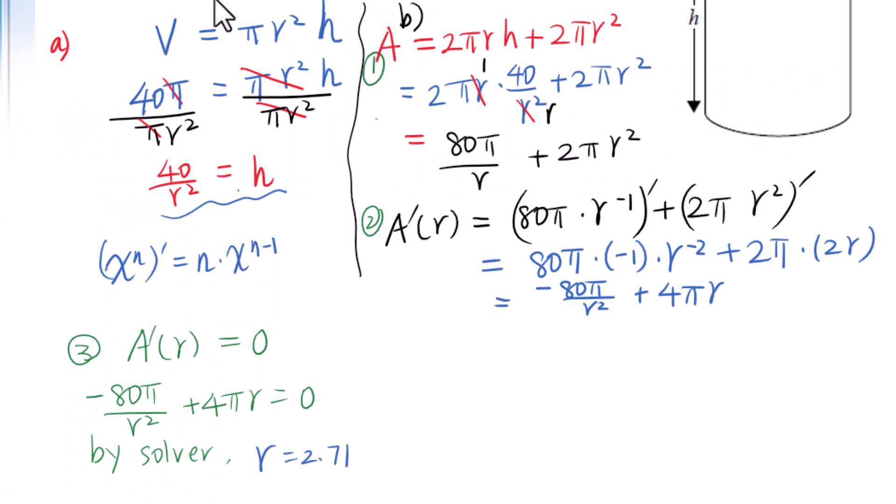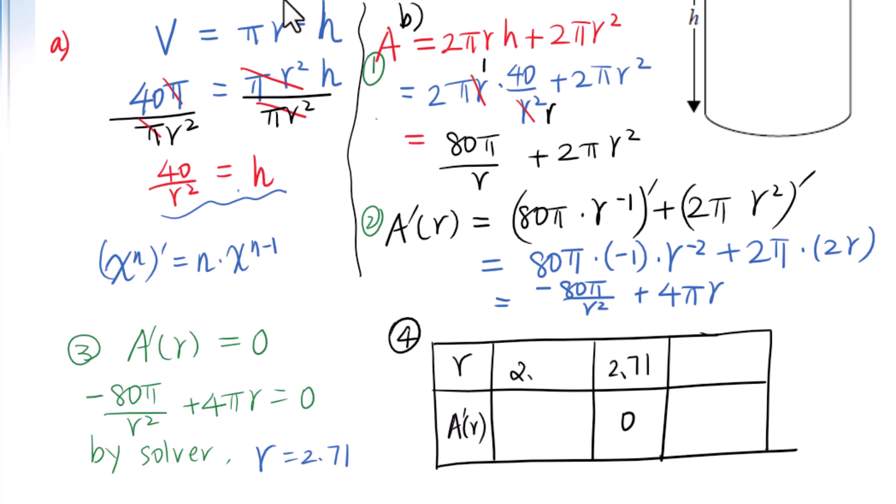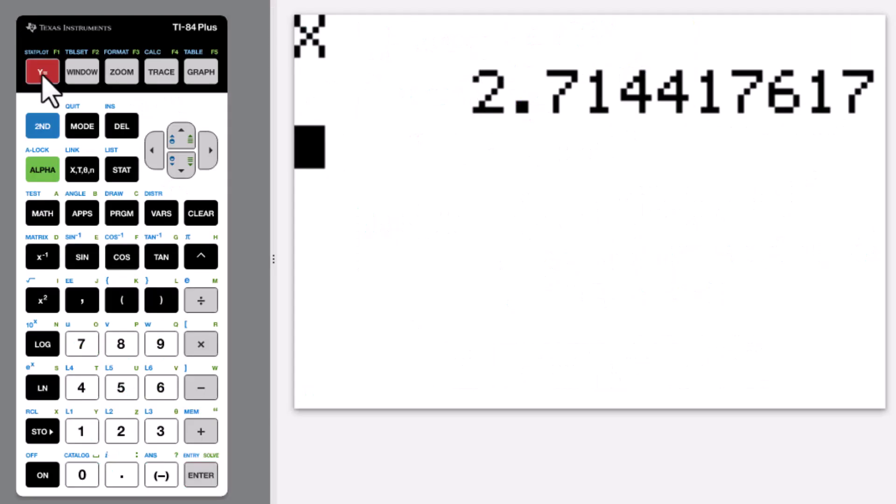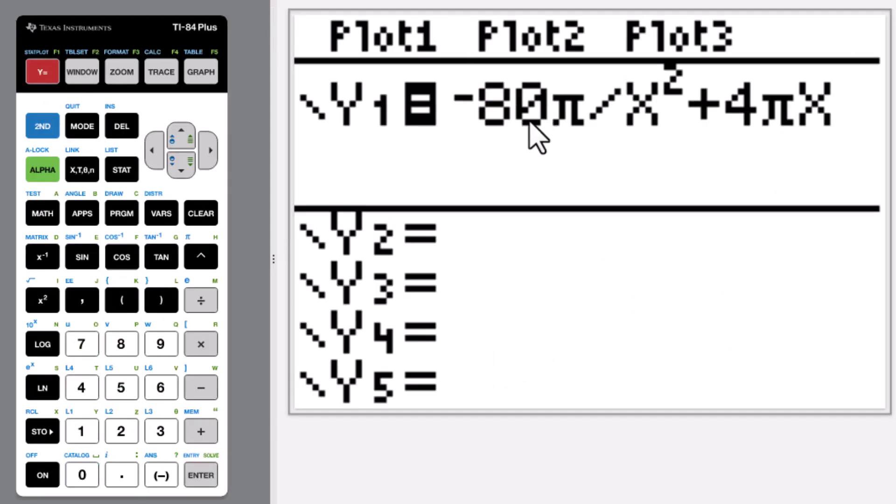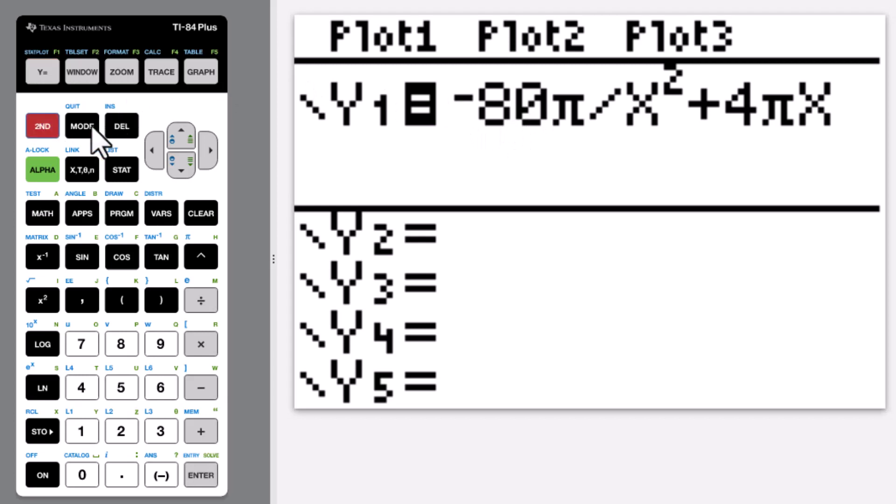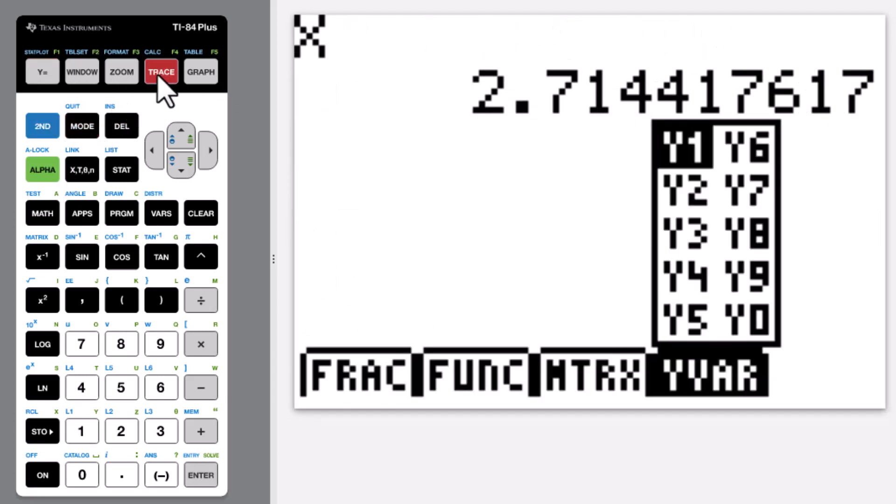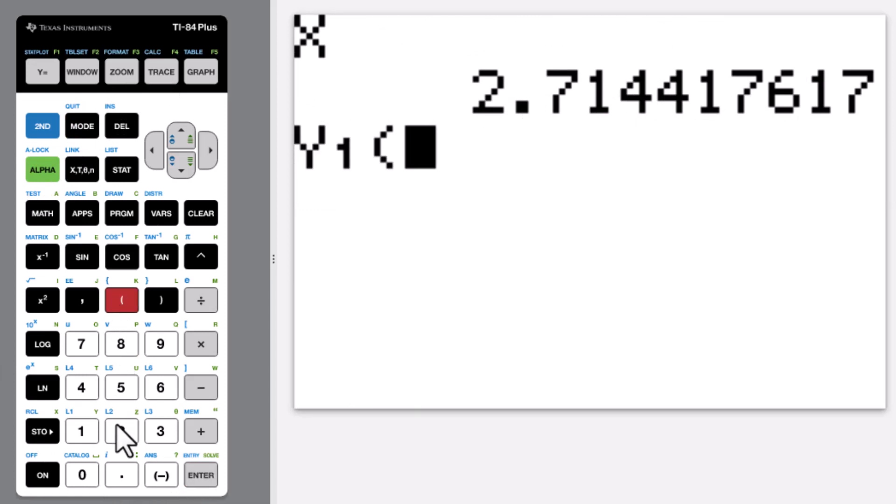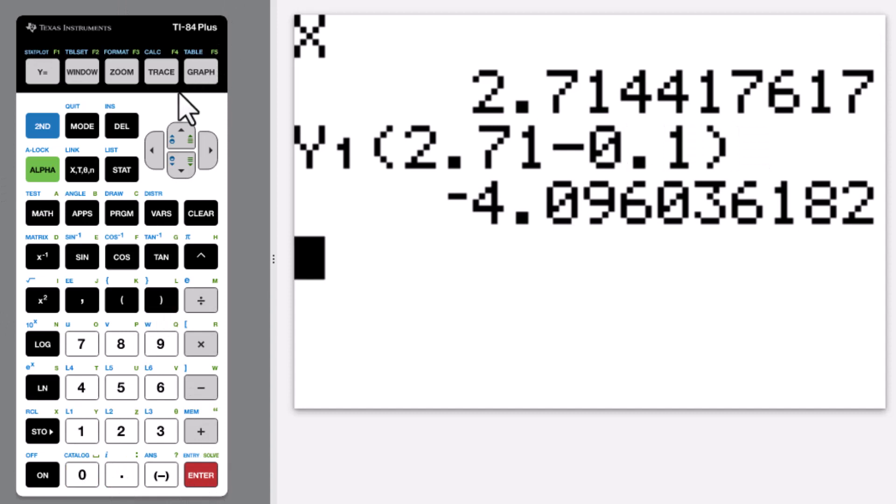Let's go to the fourth step: classify this stationary point. Since we already put this derivative function into y1, quit, alpha, trace, y1. 2.71 minus 0.1, enter - it's negative.